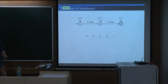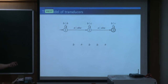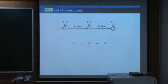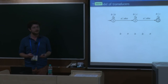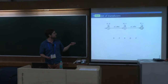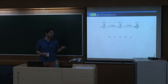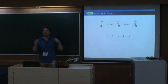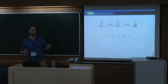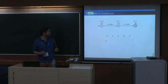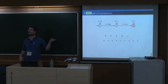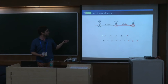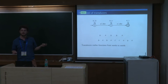A transducer is an automaton where every transition is equipped with a production. You read your input — the left part of the transition — and produce the output part, and along the run you concatenate the productions to give you an output word. So here you start in state one, read a B and produce a B, then read an A and produce ABA, etc. From an input word you get an output word — instead of a yes/no answer, you realize a function from words to words.